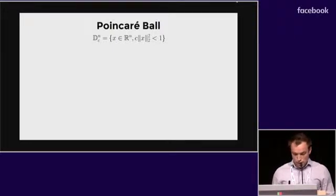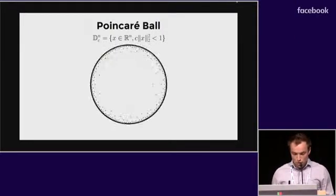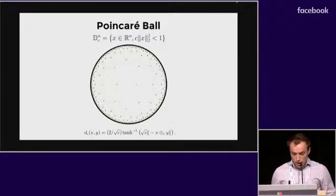We are using the Poincaré ball as a model of hyperbolic geometry. What's good about this model is that we have access to closed form expression of some important quantities, like for example, the distance function.